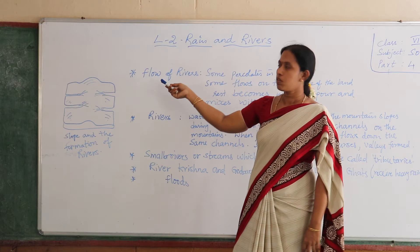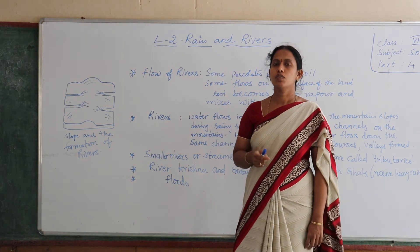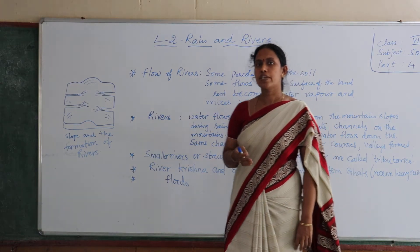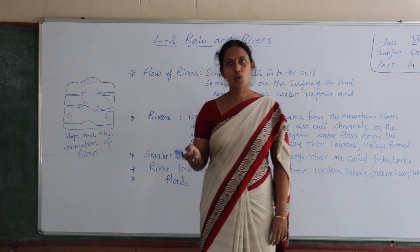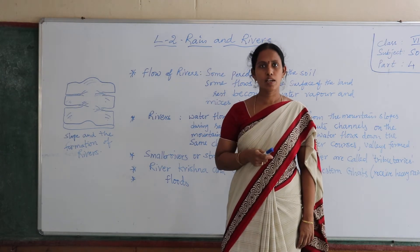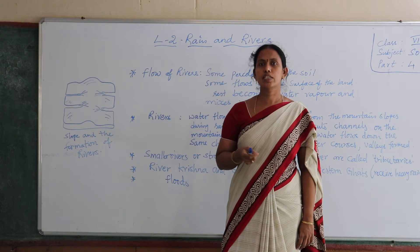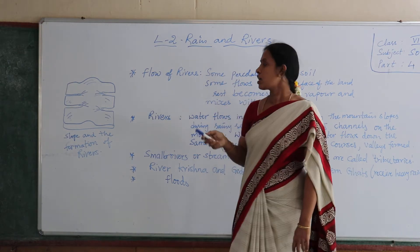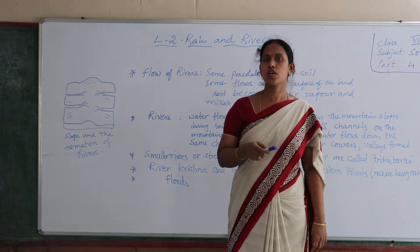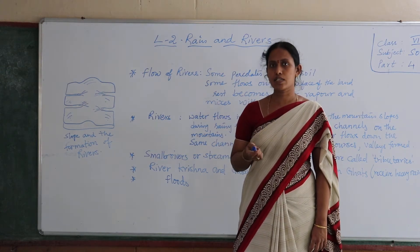First we should know the flow of rivers. What happens to the water which flows on the earth? Some of it circulates into the soil and some water flows on the surface of the land. Some water evaporates and mixes with the rain. We will learn more about water that evaporates into the soil in the next class.